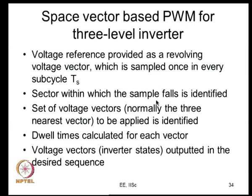In the two-level inverter you normally use two active vectors flanking the reference vector plus one zero vector. Here you consider different sets of vectors — normally the three nearest vectors. Finding these three nearest vectors requires additional computational effort. Once identified, for each of the three vectors you calculate the dwell time. Depending on where the reference falls, different formulas may be needed, and then you output the voltage vectors in the desired sequence.